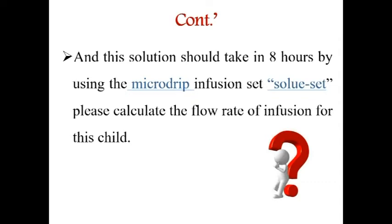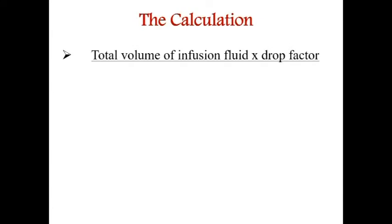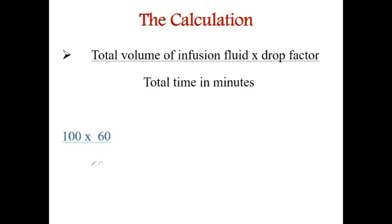Calculation: Using the formula — Total volume × drop factor ÷ total time in minutes. Total volume = 50 + 30 + 20 = 100 cc. Drop factor for micro drip (soluset) = 60. Total time = 8 hours × 60 = 480 minutes. Therefore: 100 × 60 ÷ 480 = 12 drops per minute.